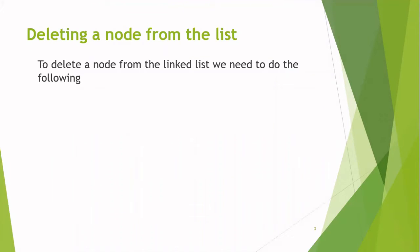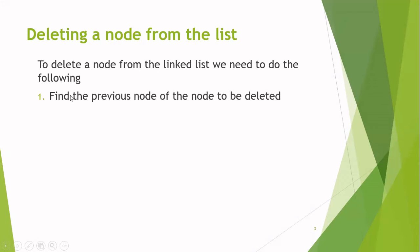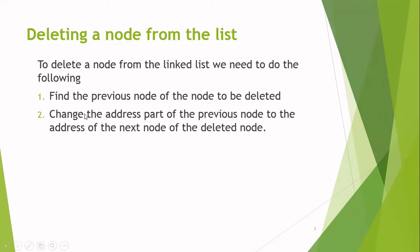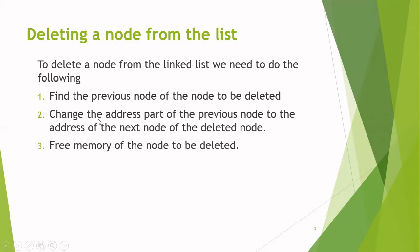Deleting a node from the linked list. To delete a node from the singly linked list, we need to perform the following steps. First, you have to find the previous node of the node that you are going to delete. After finding the previous node, you have to change the address part of the previous node to the address of the next node present after the node you are going to delete. Next, you have to free the memory location allocated for the node you are going to delete.